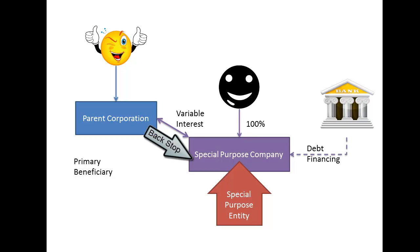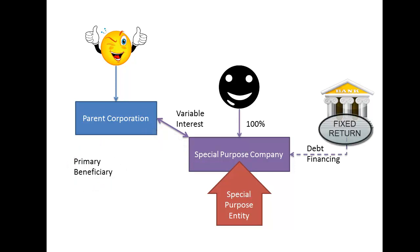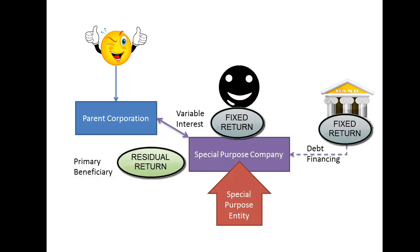To get the financing from the lenders in the first place, the parent corporation is going to have to stand behind the obligations of the special purpose company. For this reason, the parent corporation is said to have a variable interest in the special purpose company. The parent corporation, in effect, becomes the primary beneficiary when, as a result of this variable interest, it participates in the good or bad results of the special purpose company. Keep in mind that the lender's rate of return is fixed, as is the so-called equity holders', so the residual often falls to the primary beneficiary — in this case, the parent corporation.